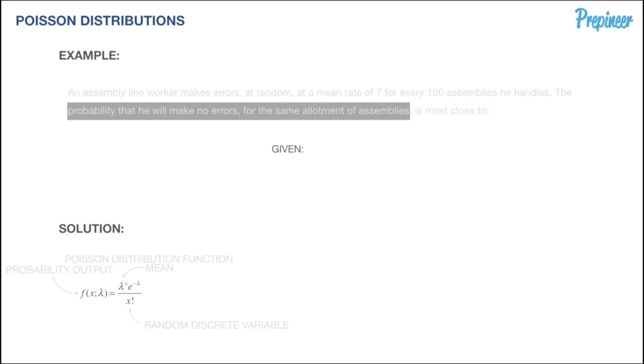Let's highlight what we are given. The mean is 7 errors per allotment, and the interval is 100 assemblies. It's very important to recognize whether the interval in which this mean occurs is equivalent to the interval in which you're being asked to define a particular value.